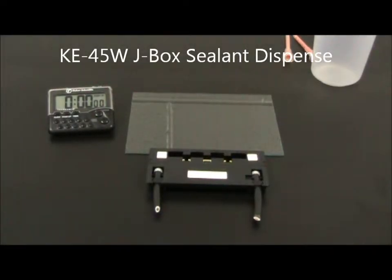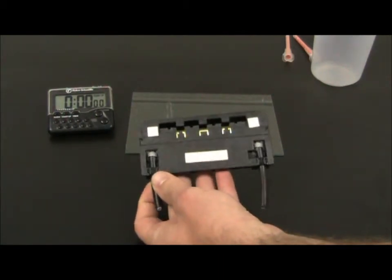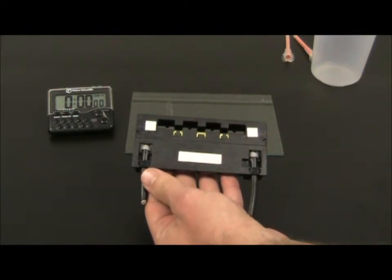Alright, so here we have a junction box for a solar panel. Most of the junction boxes are designed to use a sealant to help bond it to the back of the panel and to aid in prevention of moisture from getting inside of the junction box.